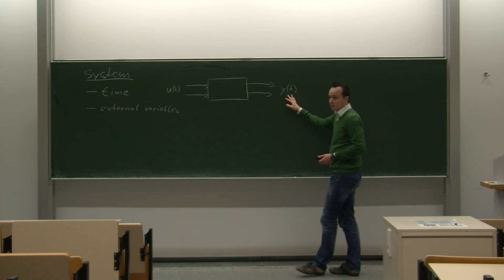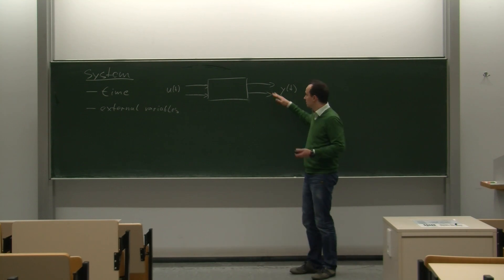For outputs, it is similar. There are outputs that are, in some sense, observable or measurable. We call them measurable outputs. And there are outputs, which can be a subset, but don't have to be, which we want to regulate in some sense.